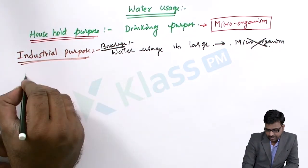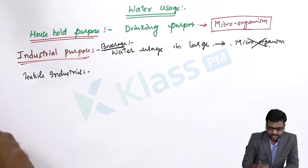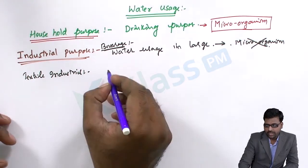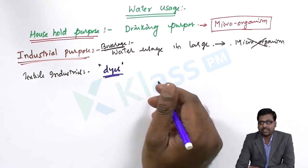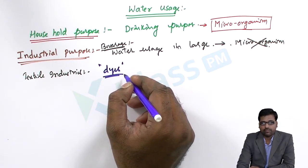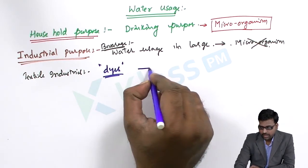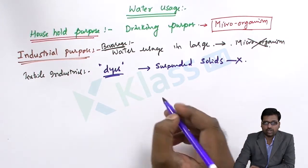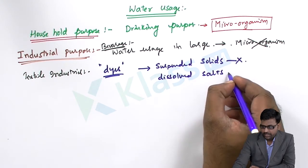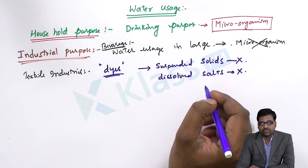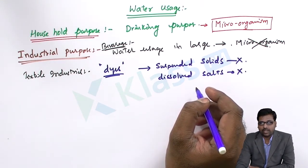In textile industries, water is used for dyeing purposes — to clean the dyes or to spray the dyes onto the cloths. The water used in textile industries should not contain suspended solids or dissolved salts, because if dissolved salts are present, they may interact with the dyes and may not give the definite colour required.